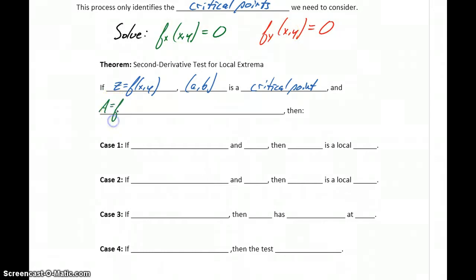Capital A, which is equal to the second partial derivative with respect to x, evaluated at (a,b). Capital B, which is the first derivative with respect to x, second derivative with respect to y, evaluated at (a,b).